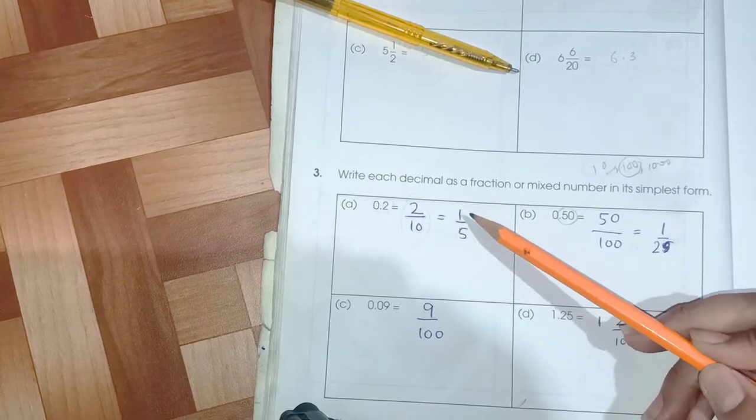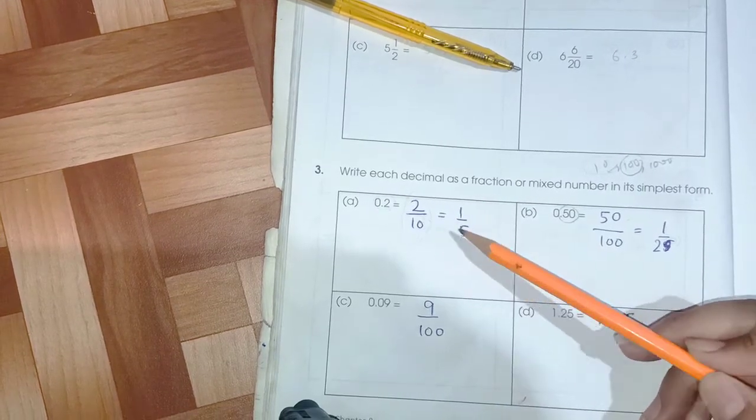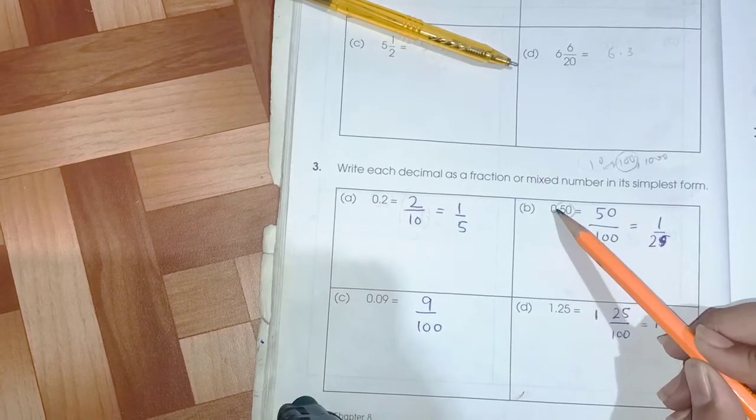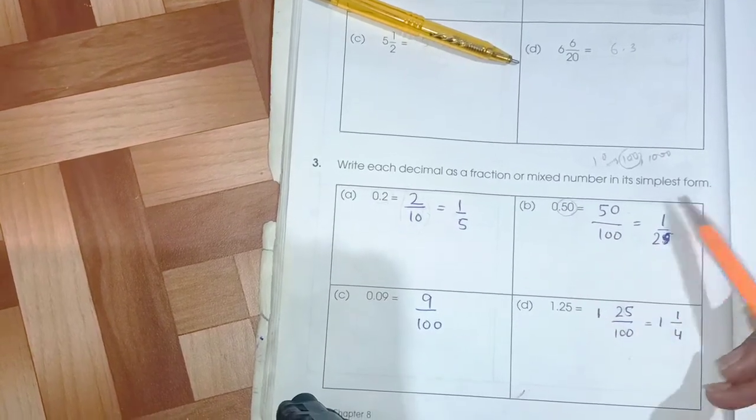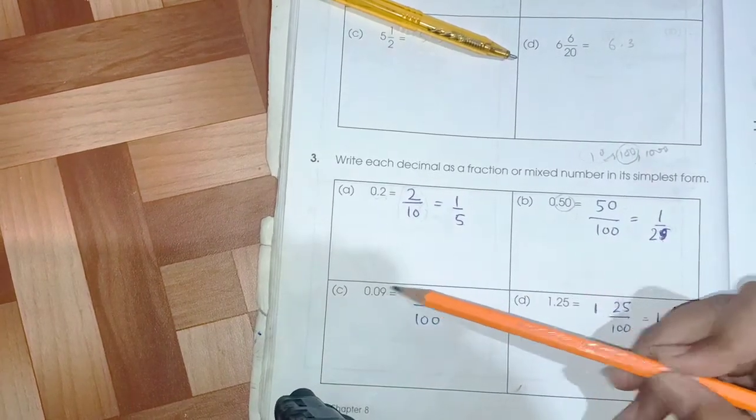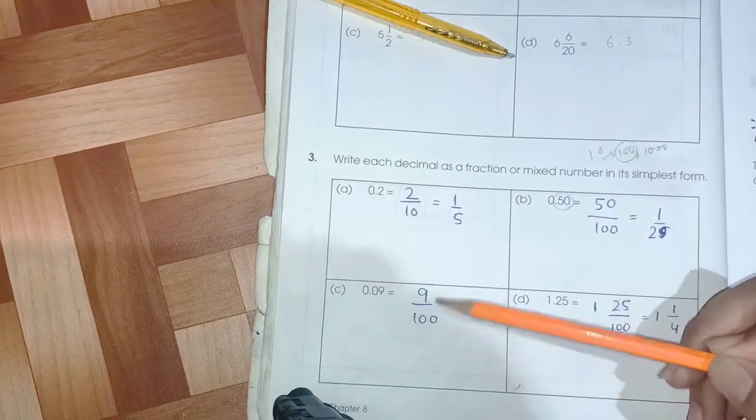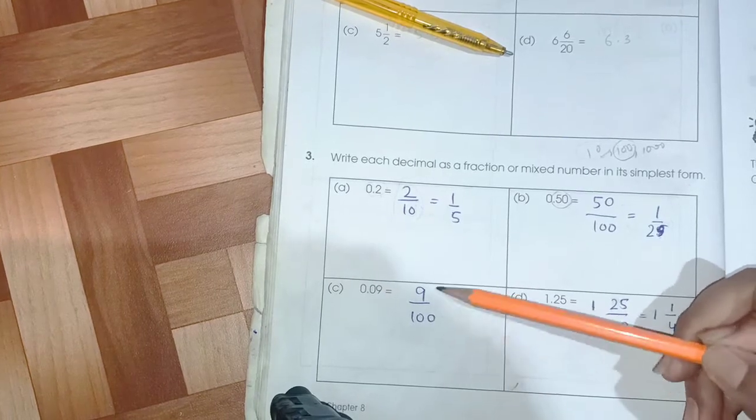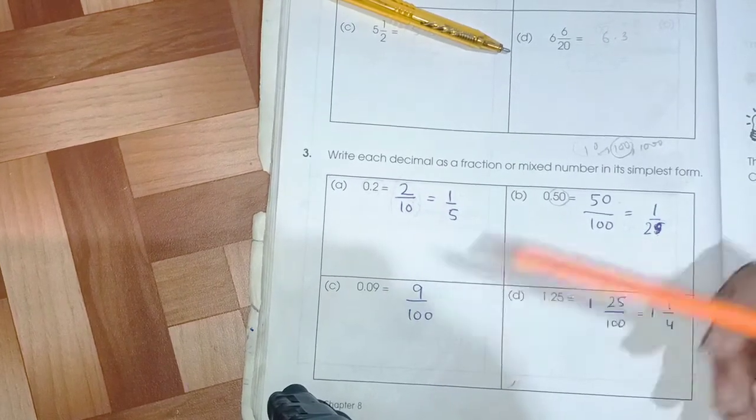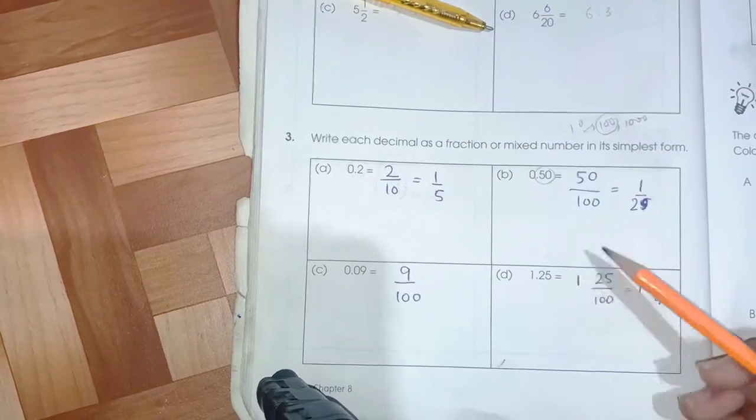Now we have to convert it into simplest form. Two ones are two, two fives are ten. We cannot cut both of them, so we just have to write it as an answer.